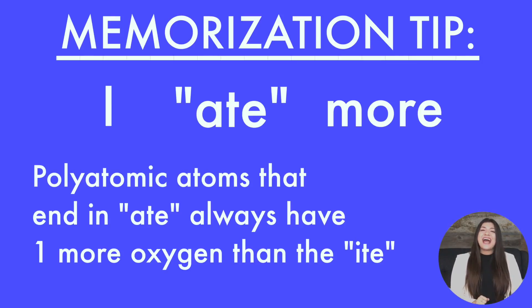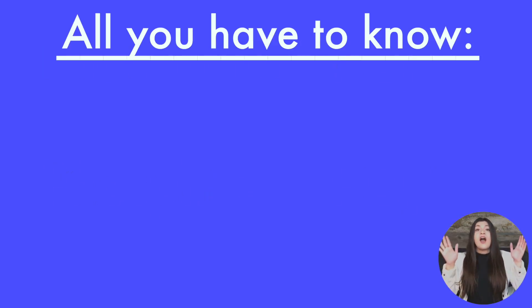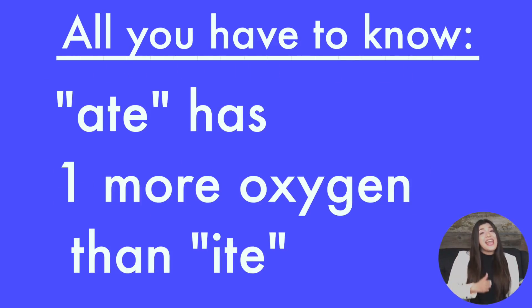Polyatomic atoms that end in "-ate" always have one more oxygen than the "-ites." Phosphate, or PO4, has one more oxygen than phosphite, PO3. All you have to know: the "-ates" have one more oxygen than the "-ites." And there you have it.